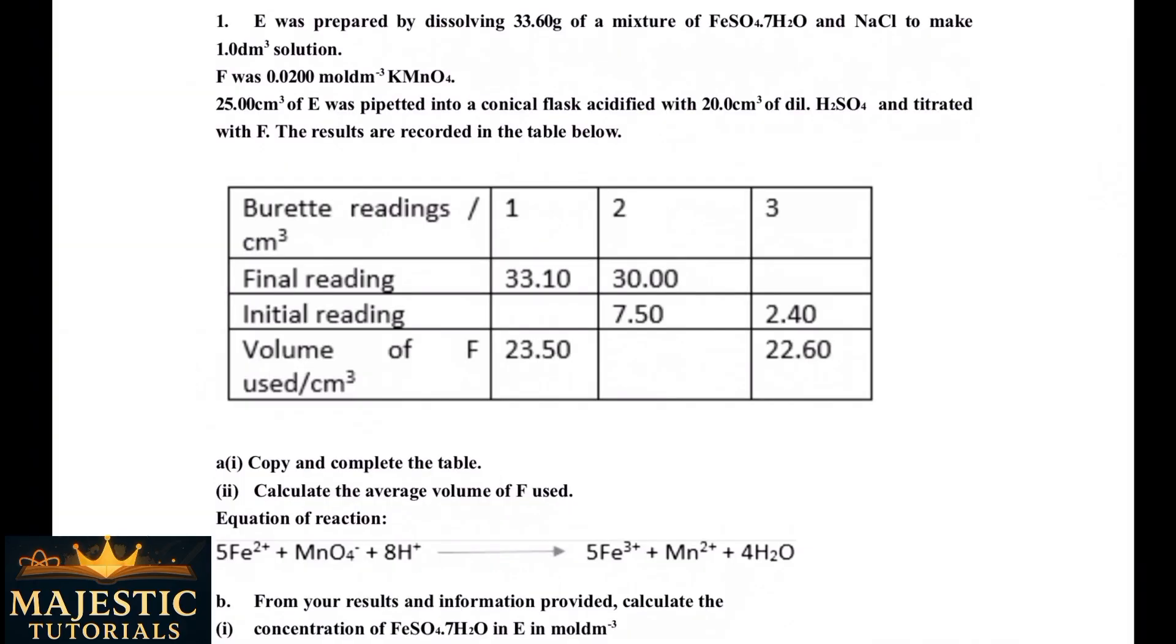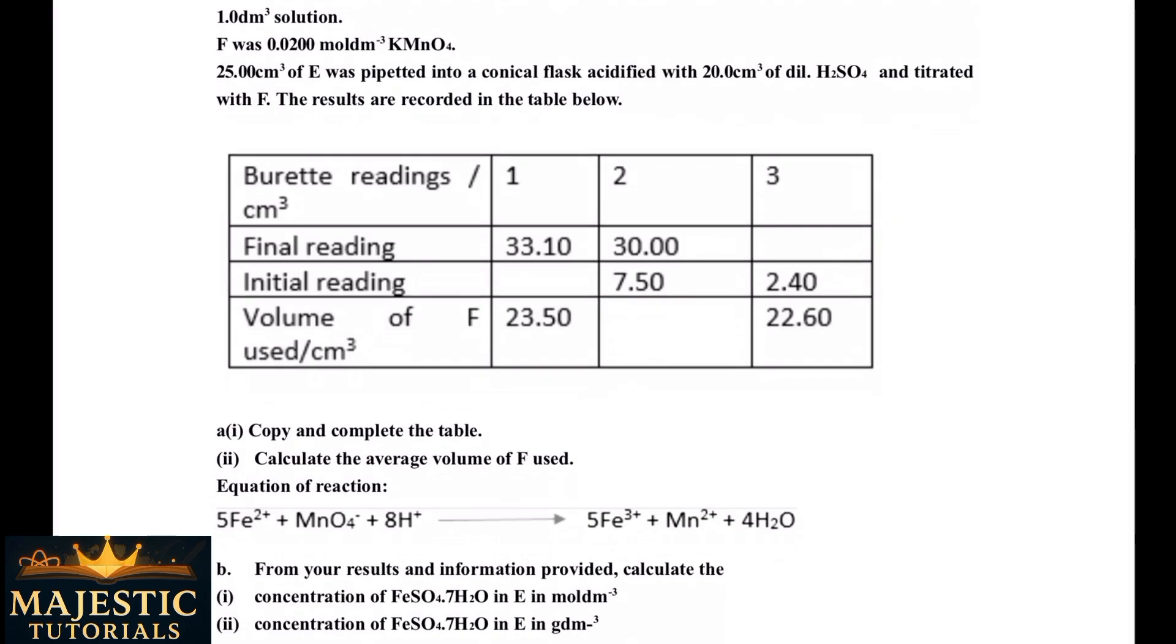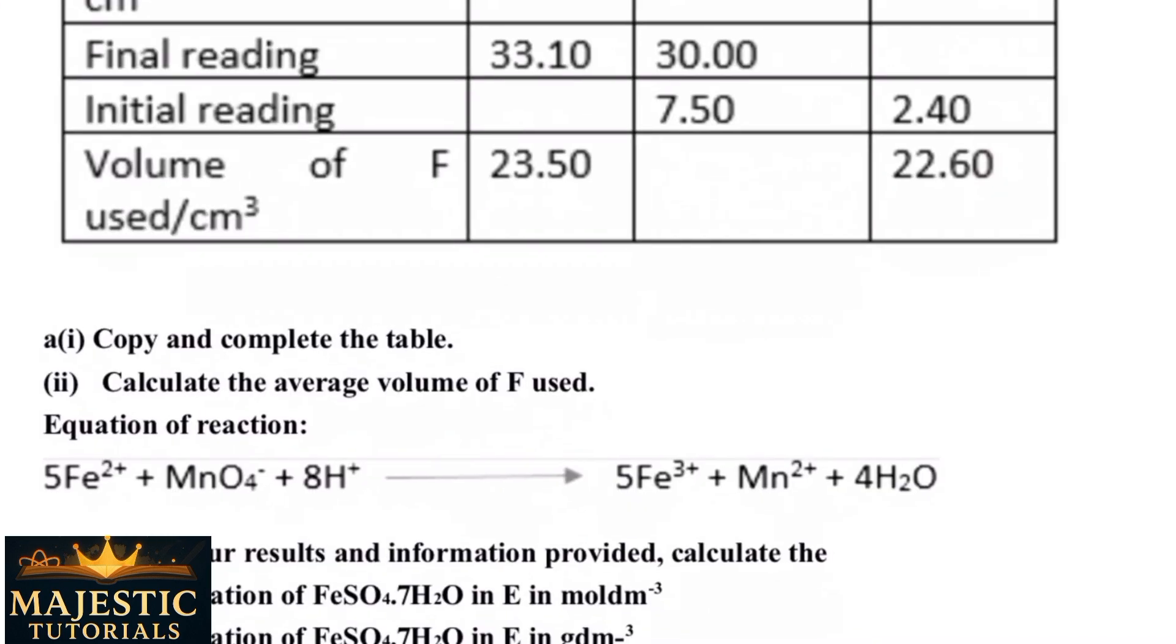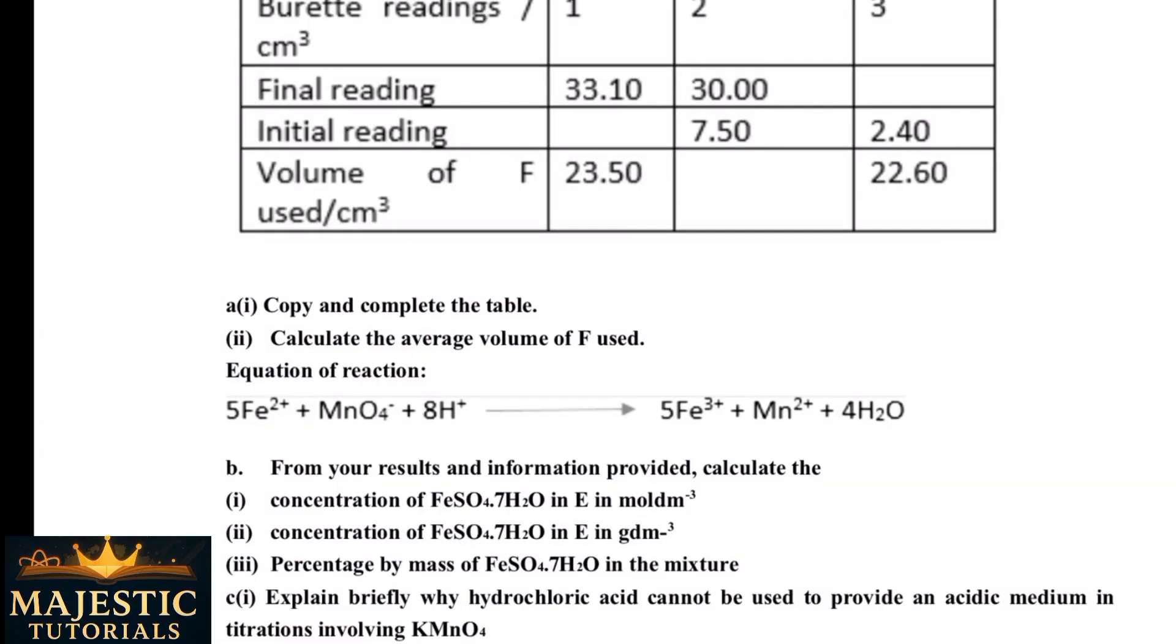So they have given you a table. Your job is to copy and complete. Question (a)(i) said copy and complete the table, calculate the average volume of F used. They give us the equation of the reaction. This type is redox titration, so I'll do one redox and one acid-base titration like I've shown you.